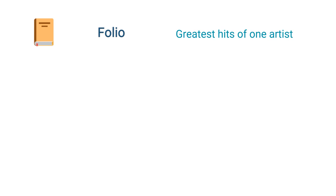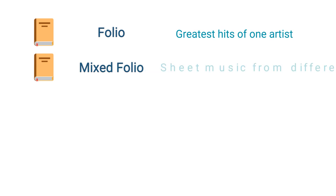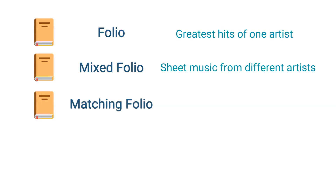Folios are collections of sheet music for various songs. It is a term for multiple sheets of sheet music. An example would be a book of sheet music titled Billy Joel's Greatest Hits, which contains several different songs by the artist in the form of sheet music. A collection of printed sheet music for songs from different artists is called a mixed folio. A matching folio, on the other hand, is a collection of printed sheet music for a particular album — the folio matches the album.